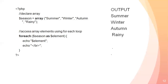I want to print each and every string on the next line. When we execute it, you get: spring, summer, winter, autumn, and rainy as the output. So this is how we declare and traverse the array using foreach.